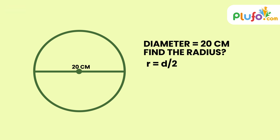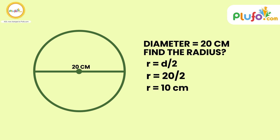Placing the value: 20 divided by 2 gives us 10 centimeters. So the radius is equal to 10 centimeters for this given circle.